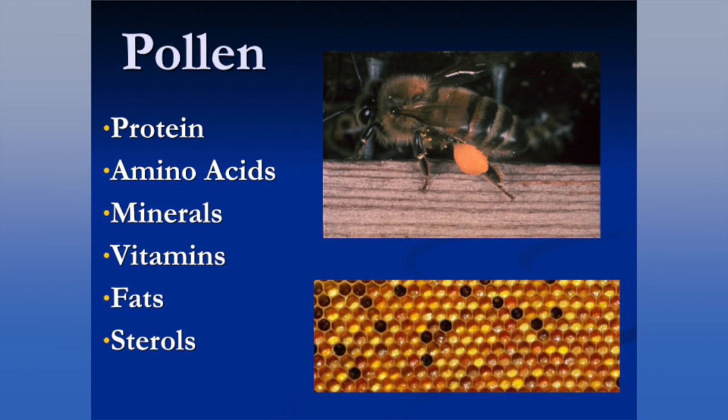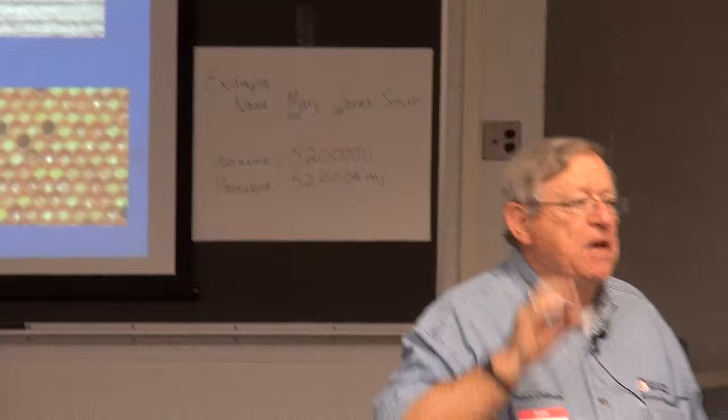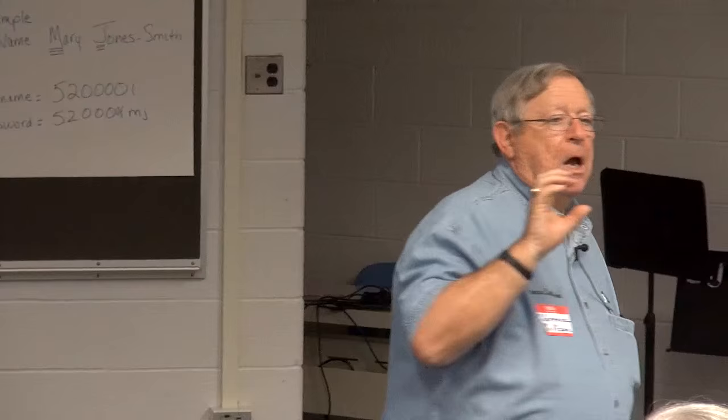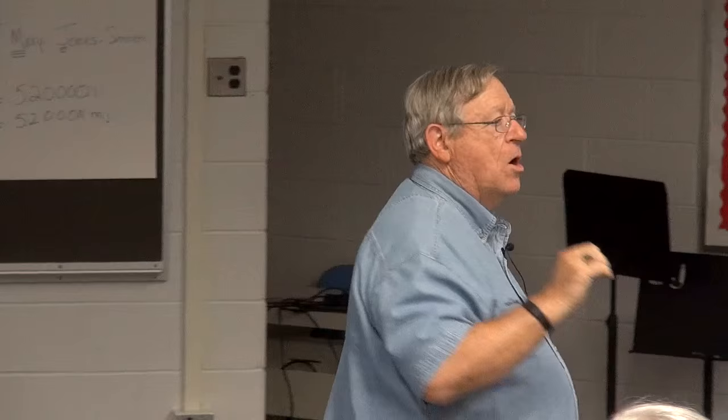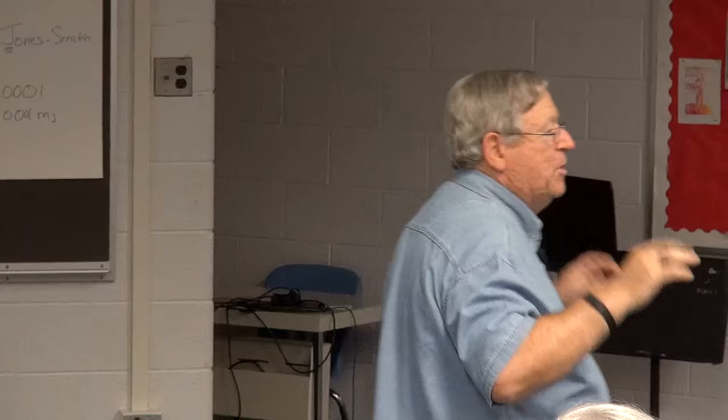Pollen is extremely important in colony development. If a colony is starving, survival comes from a carbohydrate source — whether it be sugar, nectar, or honey. They can have a ton of pollen in a hive, but if they do not have a carbohydrate source of food, they're going to die. So survival is related to carbohydrates, whereas reproduction, growth, development, and egg production are all related to proteins.